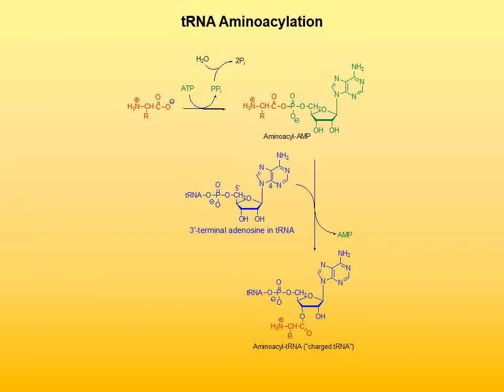There are 20 different transfer RNA acyl synthase enzymes, each one specific for a particular amino acid. The same enzyme catalyzes the reaction for all isoacceptor transfer RNAs. Class I enzymes initially attach the amino acid to the 2' hydroxyl of ribose, which is then shifted to the 3' position. Class II enzymes attach the amino acid directly to the 3' hydroxyl of ribose.